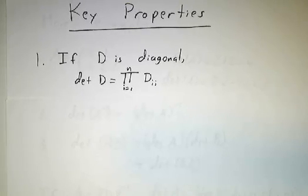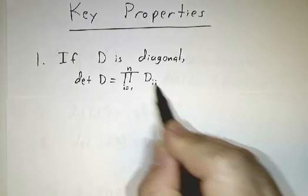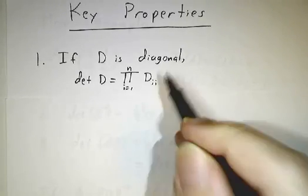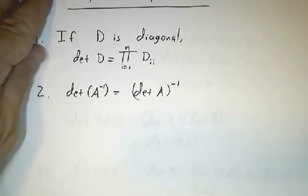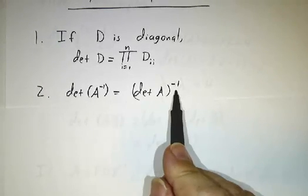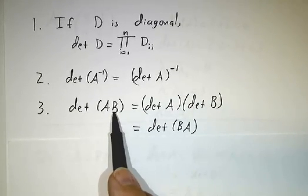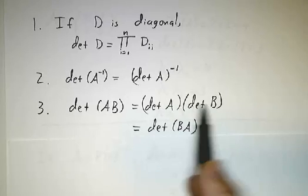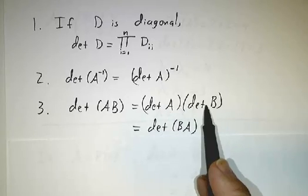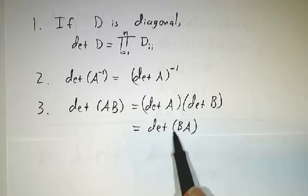If you have a diagonal matrix, the determinant of a diagonal matrix is the product of the diagonal entries. The determinant of the inverse of a matrix is the inverse of the determinant. And the determinant of a product of matrices is the product of the determinants. Of course, det A times det B is the same thing as det B times det A, which is the same thing as the determinant of BA.